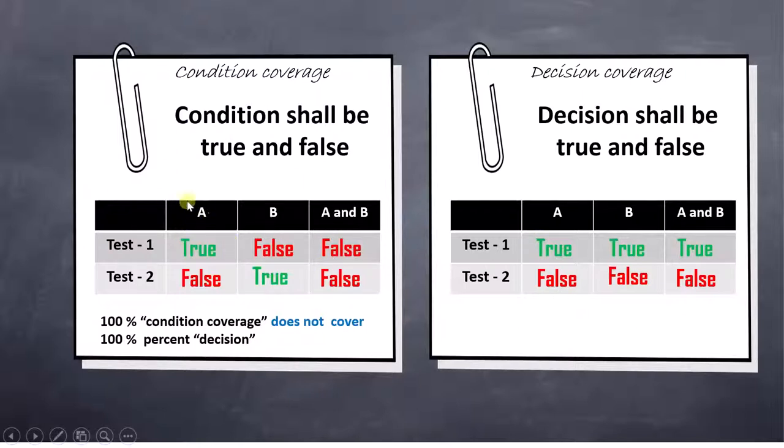For condition coverage, condition A was made true and false, similarly condition B was made false and true. When we chose these two conditions, that time our decision was always false. And that is the reason we said 100% condition coverage does not cover 100% decision.